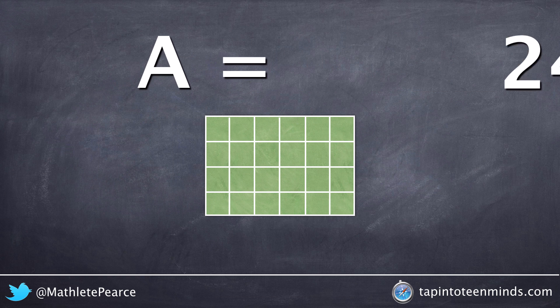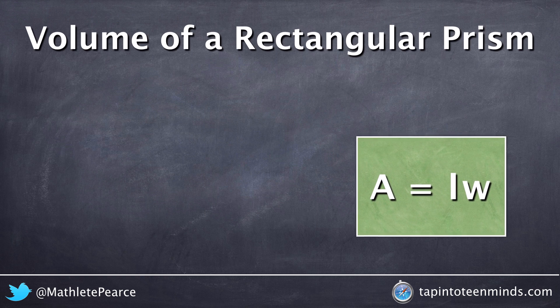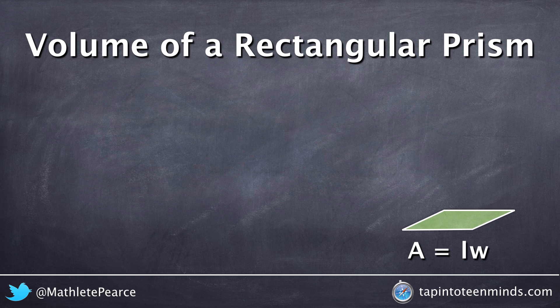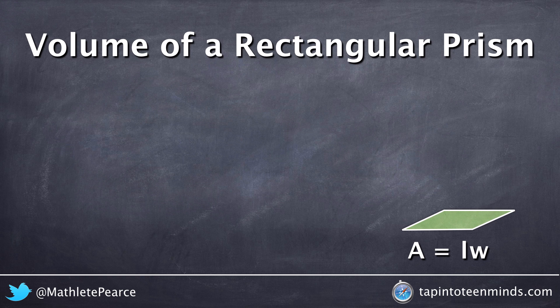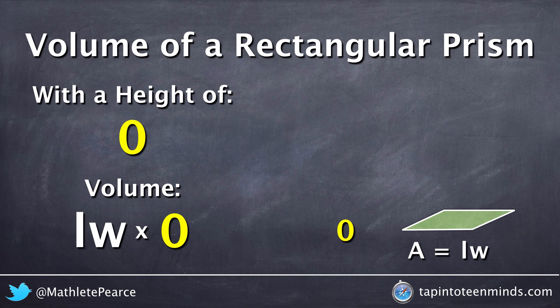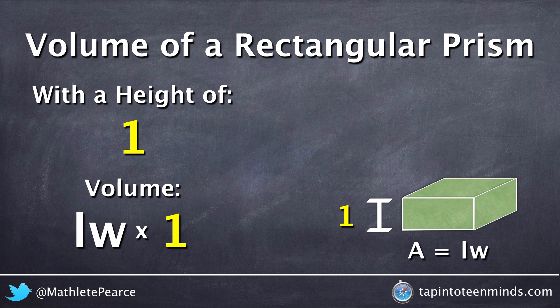Now that we've looked at some examples for finding the area of the base, let's take a look at how this will relate to the volume of this rectangular prism. As we saw in the volume of a cylinder video, the area of the base is essentially the volume of this rectangular prism with a height of 0. By increasing the height to 1 unit, we can see that we now have some volume to this rectangular prism.